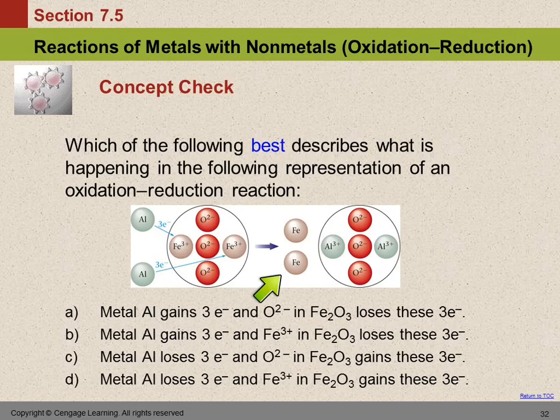When the iron gains three electrons, it becomes an atom. And now the aluminum is an ion. The oxygens didn't do anything. Those were not changed. But the aluminum and the iron were changed. So then which of these four statements describes what's happening?